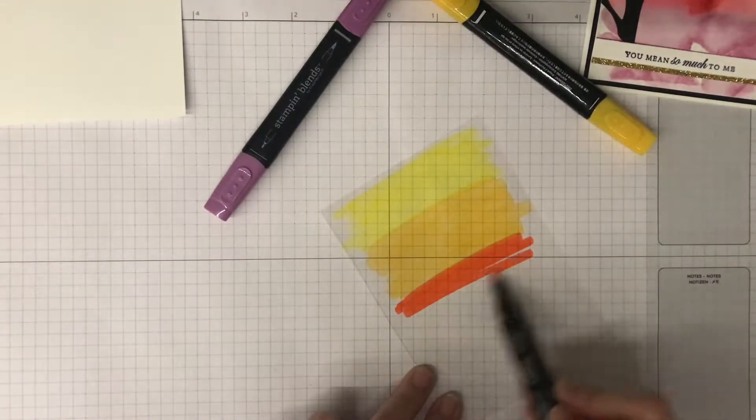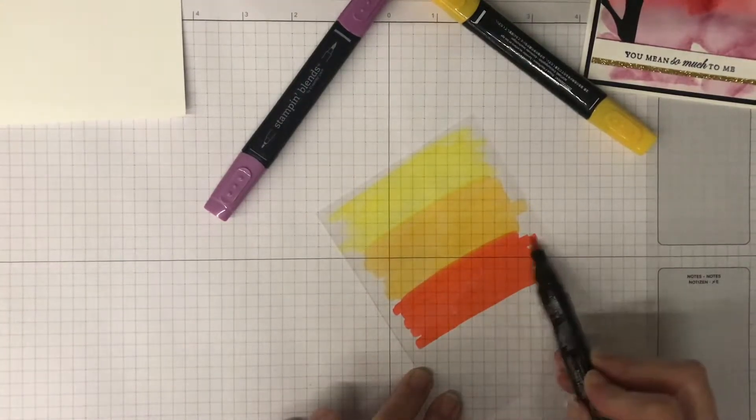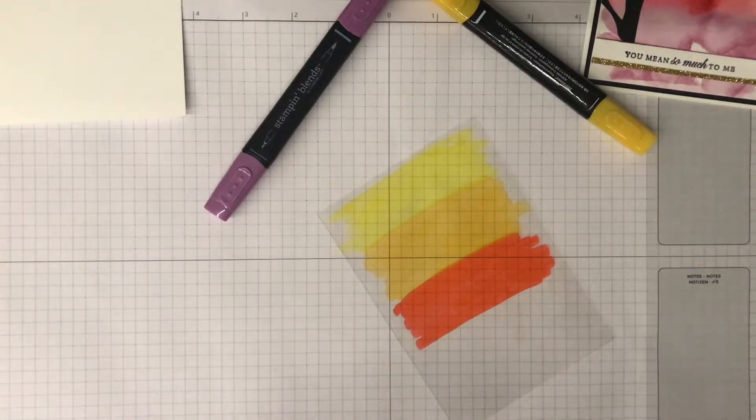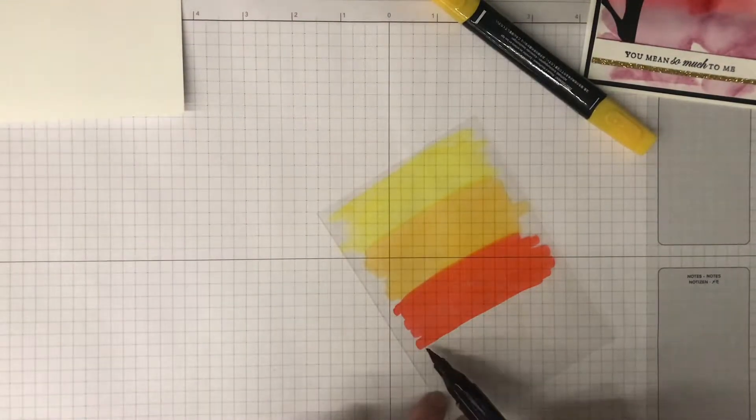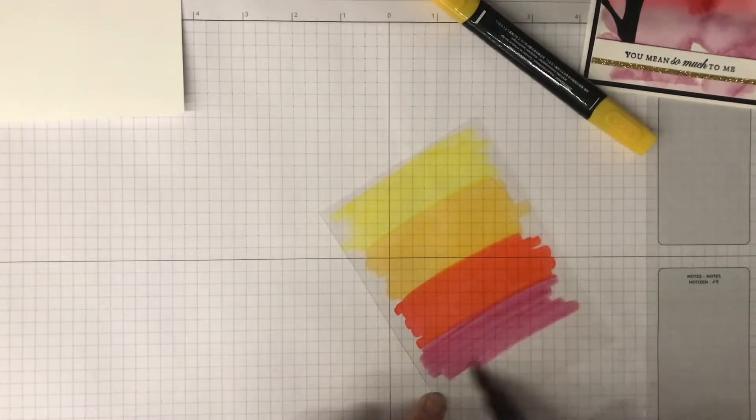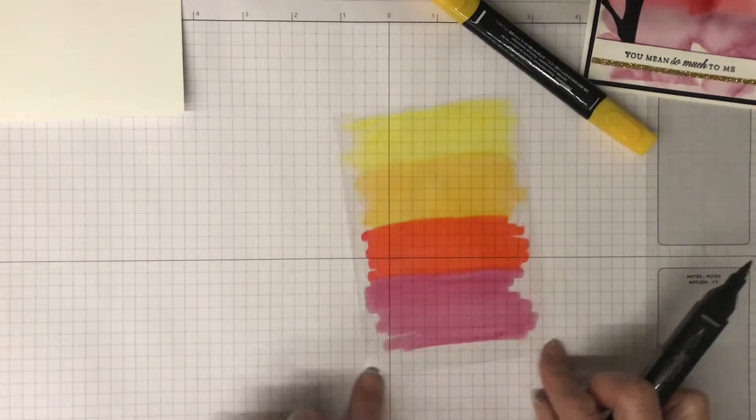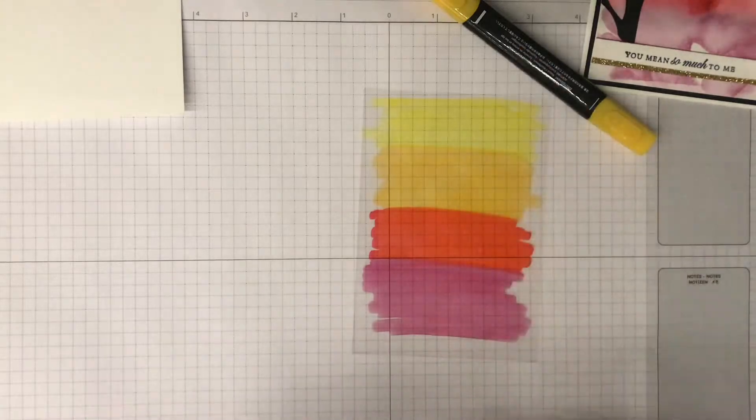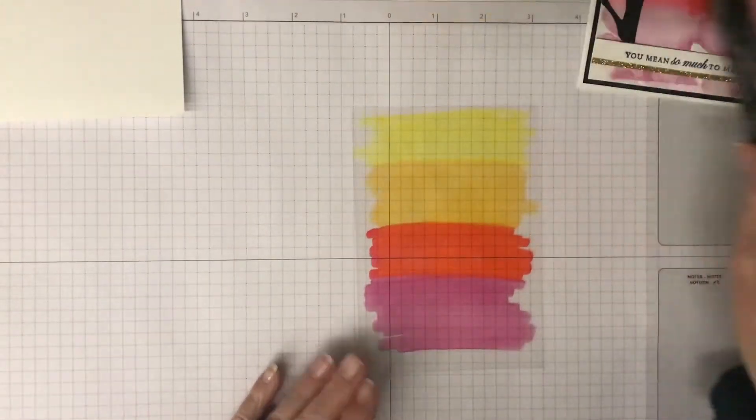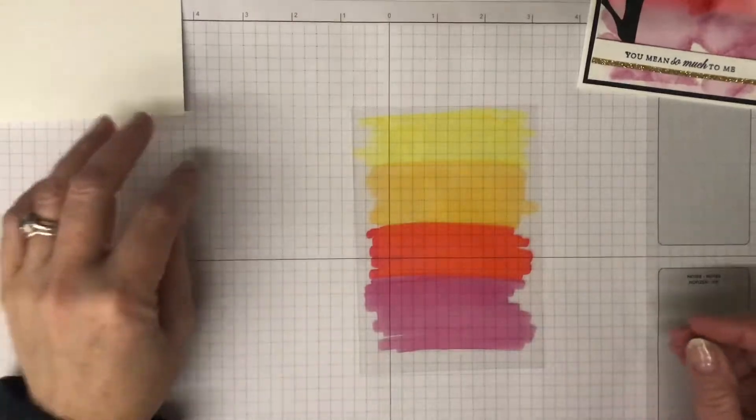Just butts right up against the previous one. Then we have Poppy Parade—they all make a different squeaky noise, which is quite amusing. And then we have, I'm using a little bit more of that. I'm just covering most of the whole thing, staying away from the edges, but it's totally up to you—you could go all the way to the edges if you want to.